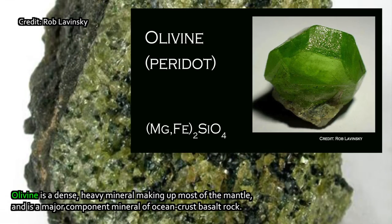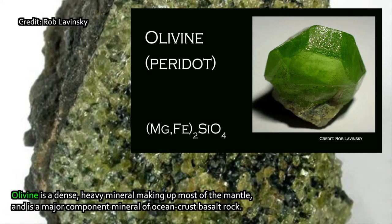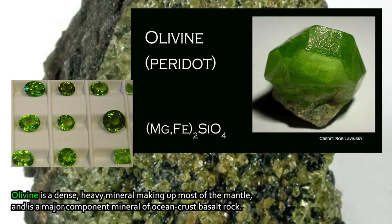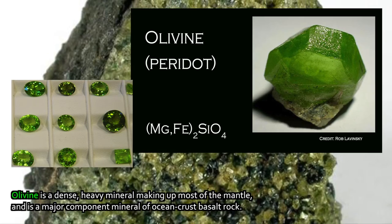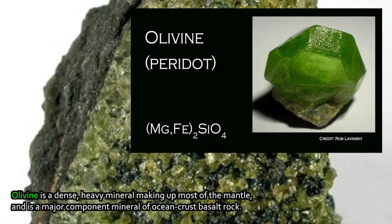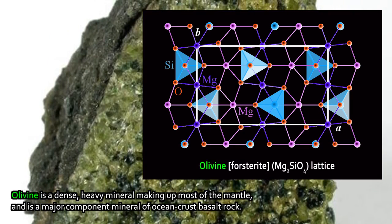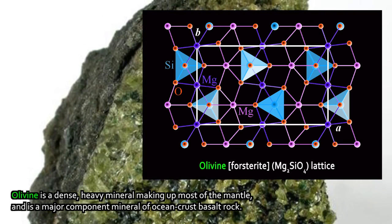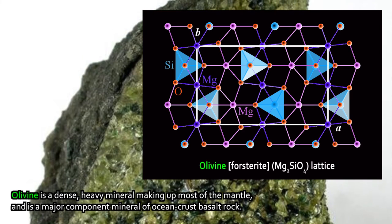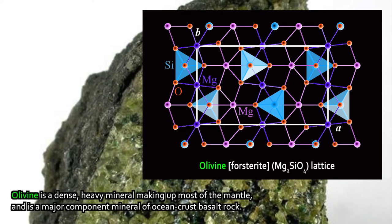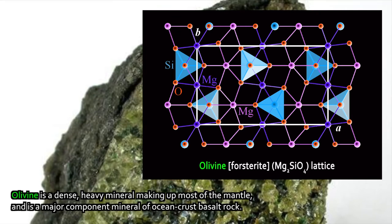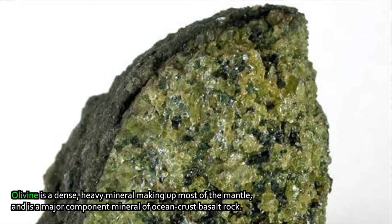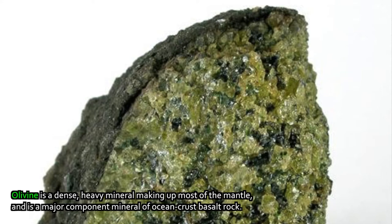When olivine occurs in really nice, gem-quality samples, it is called peridot — bright green, actually. Not quite as brilliant as an emerald, but quite pretty. Olivine's structure is based upon silica tetrahedra arranged in structures where isolated tetrahedra are bonded to other metal cations, iron or magnesium, and then to other silica tetrahedra. So olivine is a fairly low-strength, soft mineral. Its structure is not particularly resilient, and in fact it weathers quite readily at the Earth's surface to form other minerals.